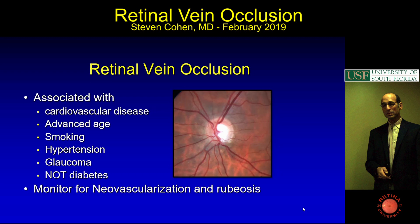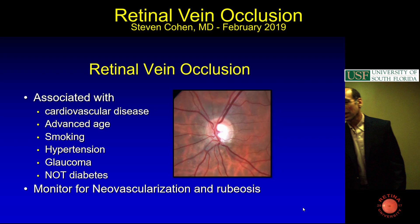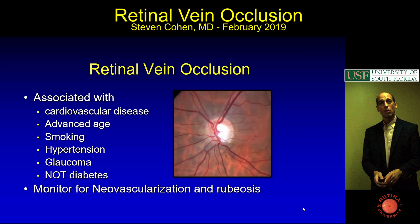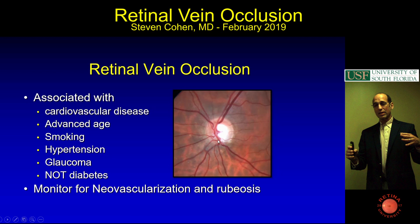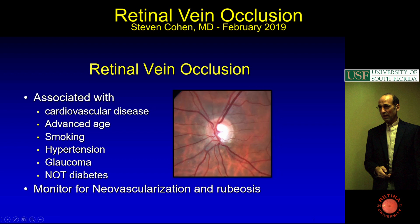One way to remember it's associated with glaucoma—because I think that would be a great test question—is to picture the nerve and all the vessels trying to get in there. This is a glaucomatous nerve, and you can see the vessels are all kind of trying to squeeze over that hill, so glaucoma is associated with vein occlusion.